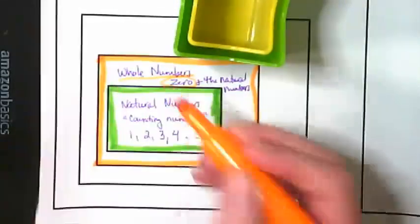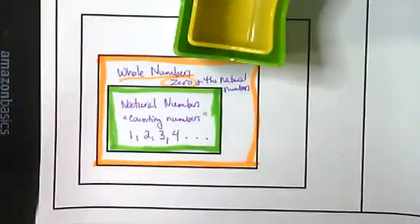So what's been added to the whole numbers is zero. Otherwise, this set of numbers is exactly the same. It just has one more number added to it.